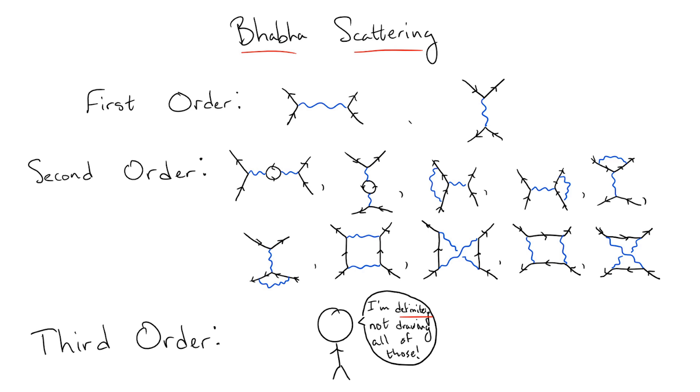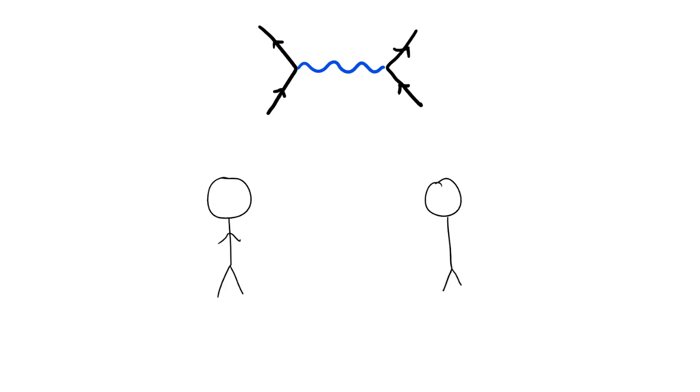Finally, we should address a very important question. Is this what's actually happening in nature? Can we say that particles interact by tossing virtual particles back and forth which themselves split and recombine in many different complicated ways?